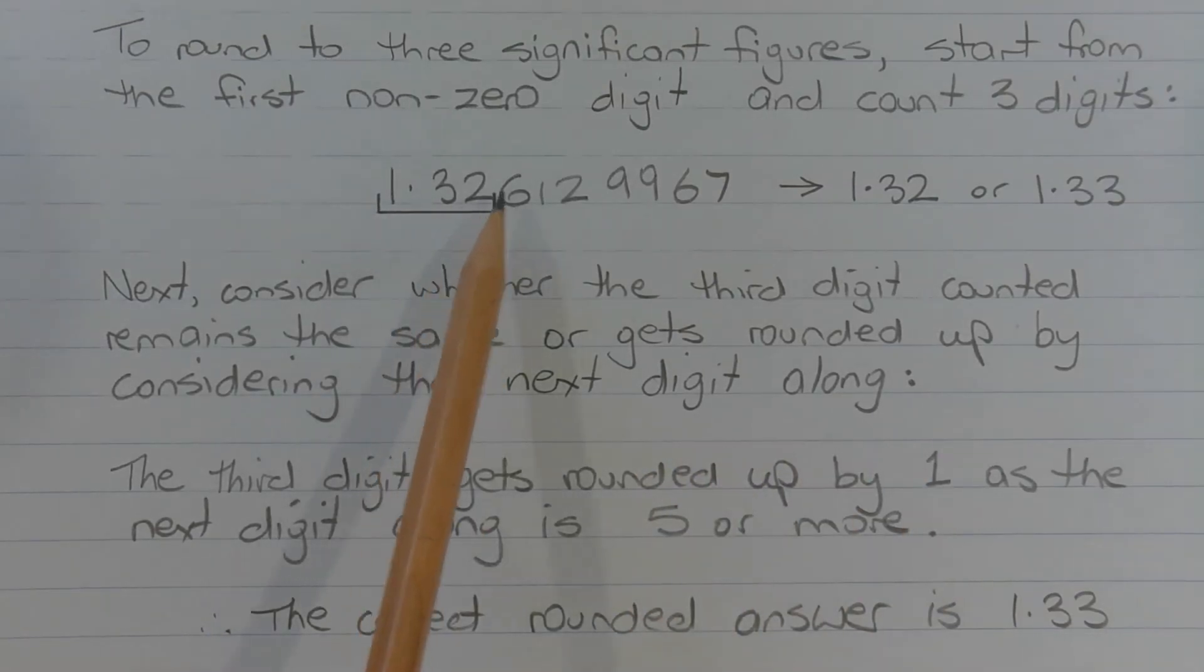So the next digit along from the 2 is the 6. Now the third digit gets rounded up by 1 as the next digit along is 5 or more.